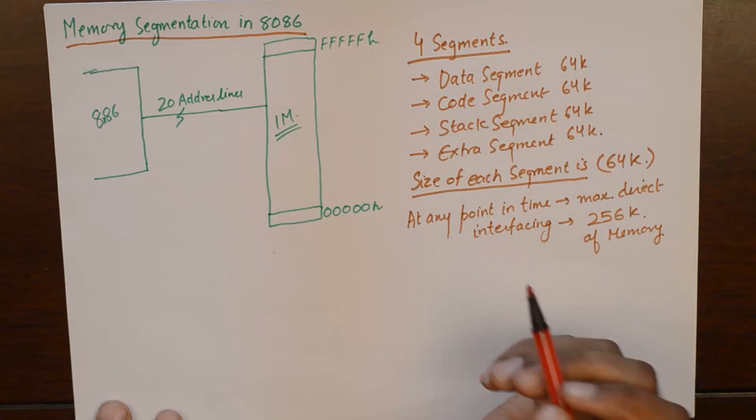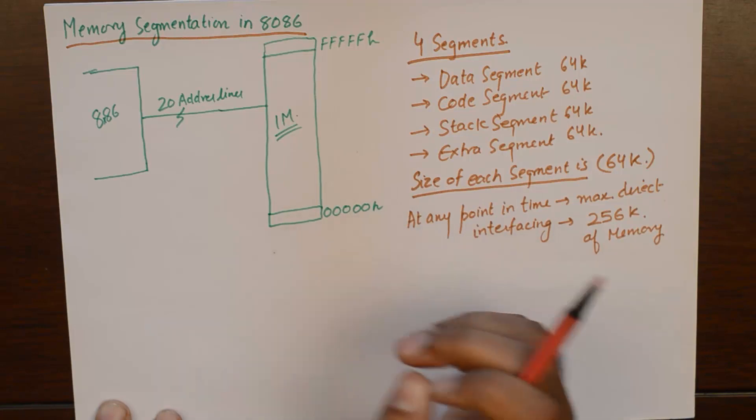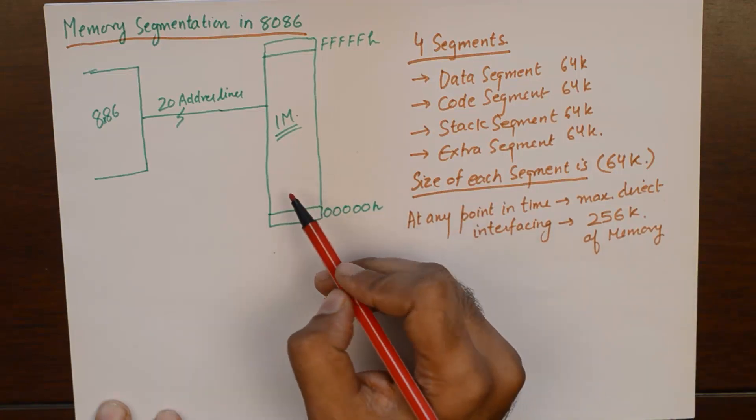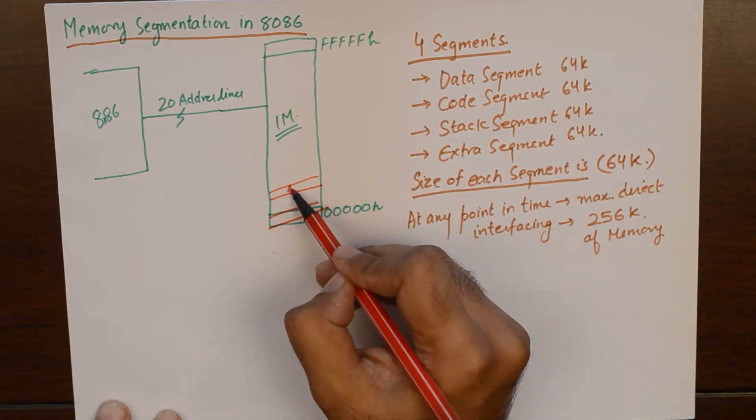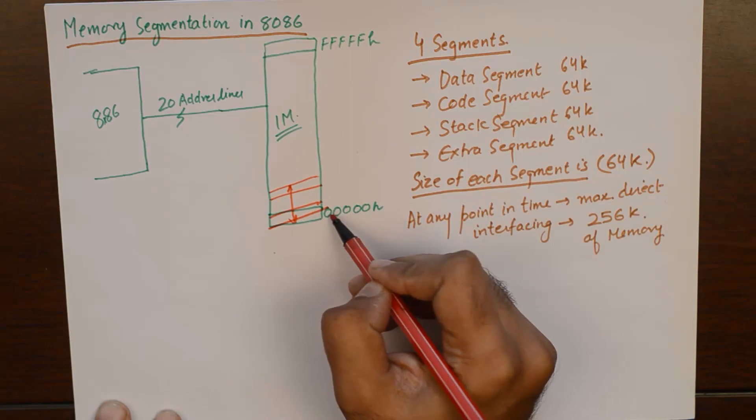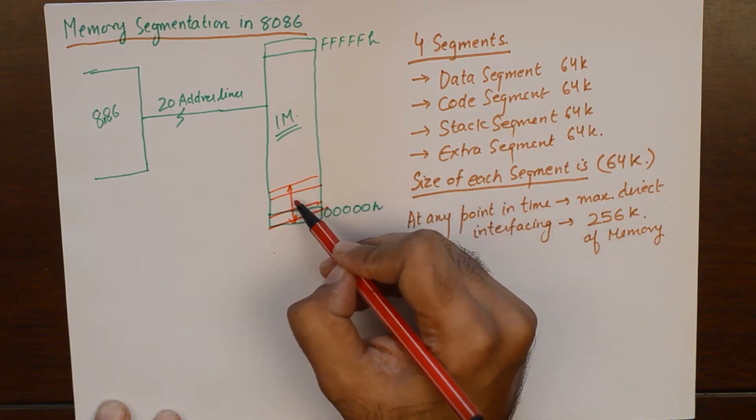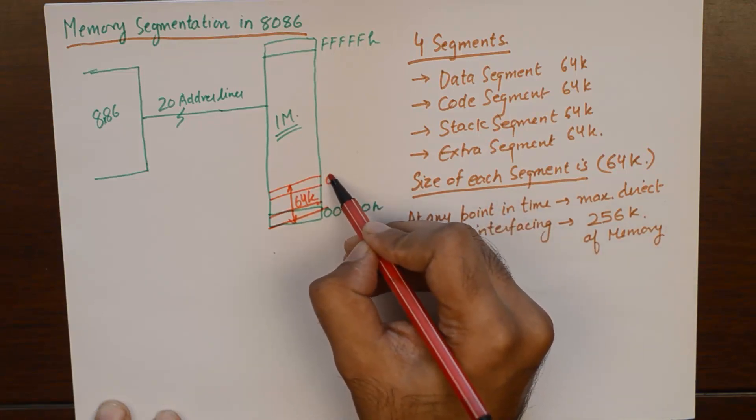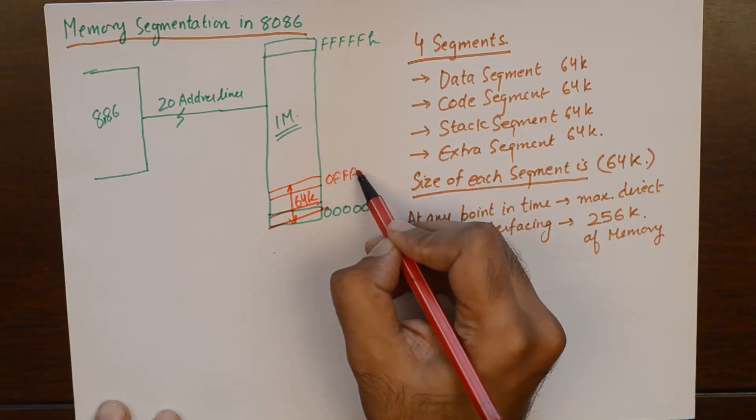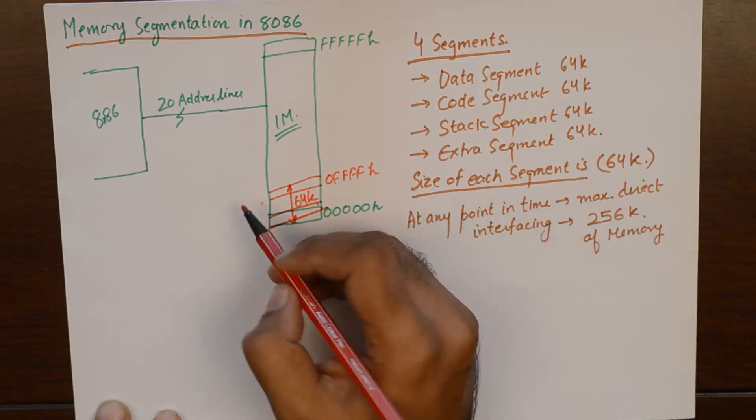For example, if we were to divide this memory into 4 different segments of 64K, we could do this by making one segment here which starts from 00000H, and this segment being a 64K segment, it will end up at 0FFFFH. Now this segment could be any segment. Let me just name it as data segment.